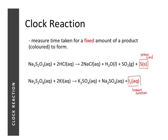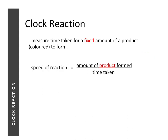In the very first lesson we learned that speed of reaction can be defined in two ways: it can be defined as the change in the amount of reactants with time, or it can be defined as the change in the amount of products with time. For clock reactions, we are looking at the change in products with time, focusing on the speed of reaction in terms of amount of product formed over time taken. There are two ways in which we can conduct the experiment.